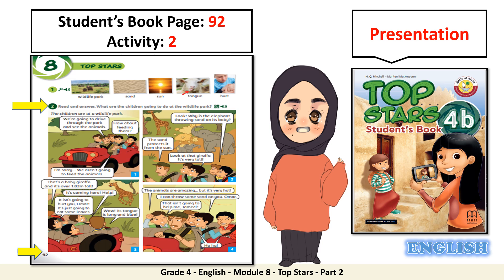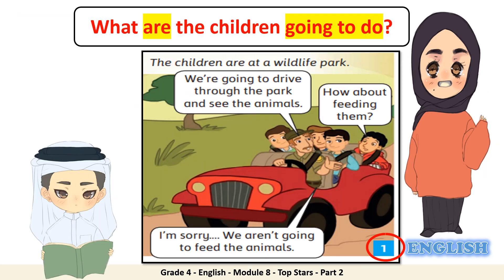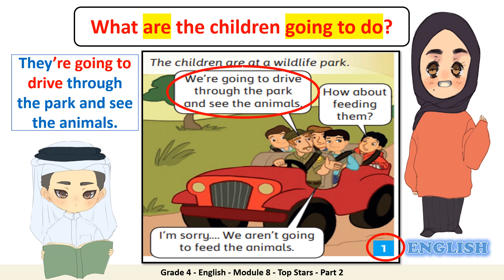Now I want you to open up your students' book page number 92 and have a look at activity number 2. Let's find the answers for the following questions. Let's start with frame number 1. What are the children going to do? Can you answer this question, Ahmed? Yes. They're going to drive through the park and see the animals.